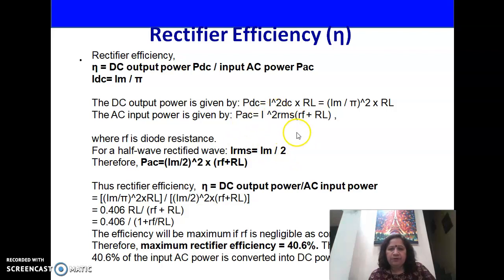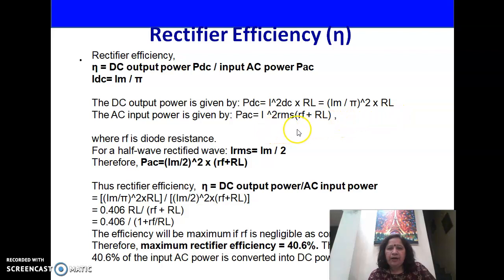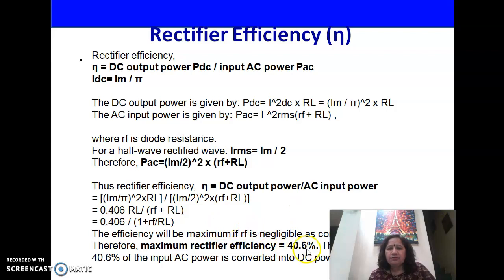We can calculate DC power output PDC as IDC² × RL, substituting IDC = IM/π, giving (IM/π)² × RL. AC input power PAC is calculated by IRMS² × (RF + RL), where RF is the diode resistance and RL is the load resistance, substituting IRMS = IM/2. Substituting the values of PDC and PAC, we can calculate rectifier efficiency, which comes out to be 40.6%. This means only 40.6% of the AC power is converted into DC by using the half-wave rectifier.